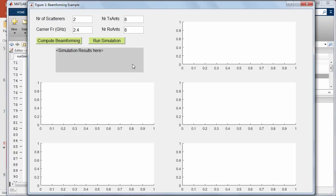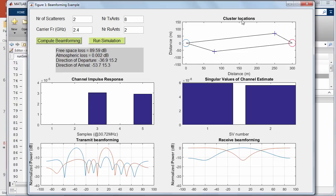Let's look at some examples. We simulate a channel with two scatterers at 2.4 GHz with eight transmit and two receive antennas. You can see the scatterer locations.